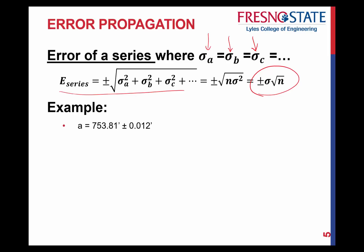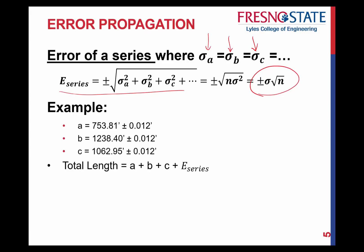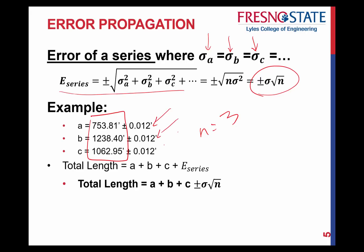Let's take another example. If A, B, and C all have the same standard deviations, and you want to figure out the total length — error of a series, we're adding everything. It's A plus B plus C, plus or minus standard deviation times the square root of N, where N is the number of observations. N is equal to 3 here. Since sigma of A equals sigma of B equals sigma of C, the result is 3055.16 plus or minus 0.021. You plug in the standard deviation value and N equals 3. Every observation had equal confidence with the same standard deviation on every single setup.